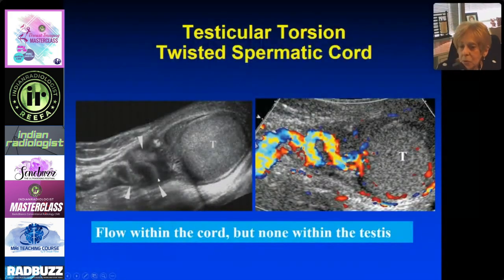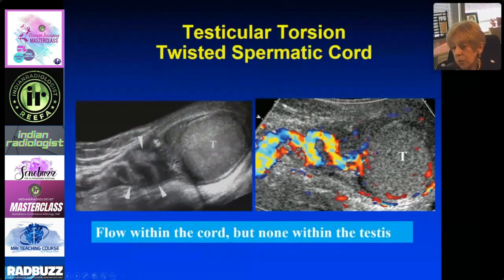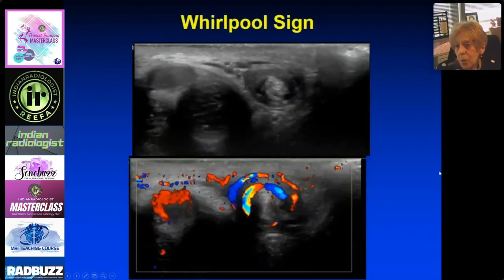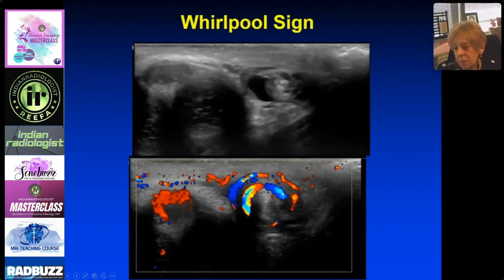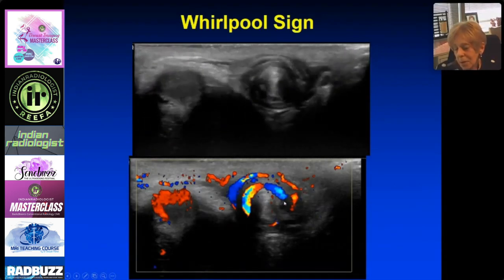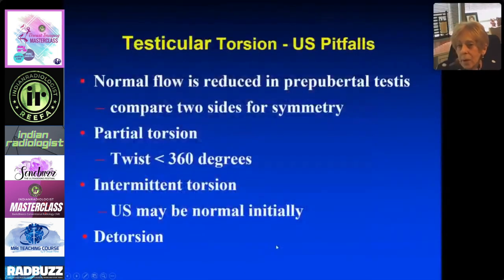Look at the cord — here's a twisted cord. With color Doppler you may see flow in the cord because the twist is just below or involving part of the cord, so blood gets engorged. The whirlpool sign on color Doppler looks almost like an intussusception — a swirling pattern that confirms the twisted cord and torsion.